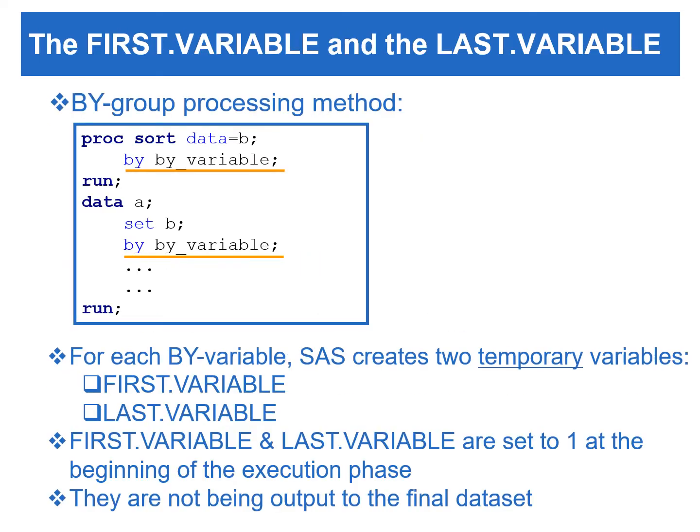To utilize by-group processing, we need to place a BY statement with one or more by-variables after the SET statement. The input data set also needs to be previously sorted by the same variables. During by-group processing, SAS creates two temporary variables for each by-variable: first.variable and last.variable. Since first.variable and last.variable are temporary variables, they are not sent to the output data set. Both first.variable and last.variable are initialized to one at the beginning of the data step execution.